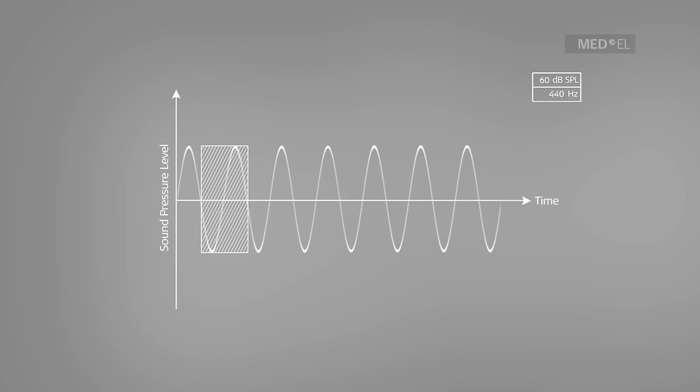The amplitude of a sound is determined by the maximum displacement of air molecules. This displacement leads to pressure fluctuations in the air, which are expressed in units called decibel sound pressure level.